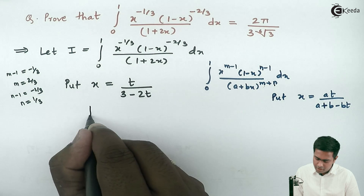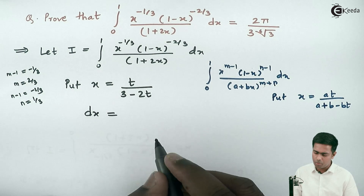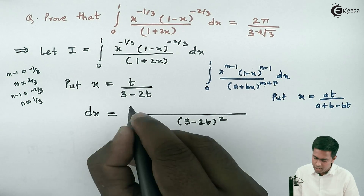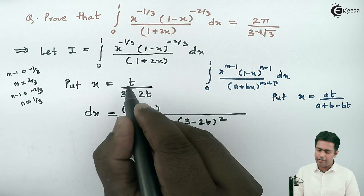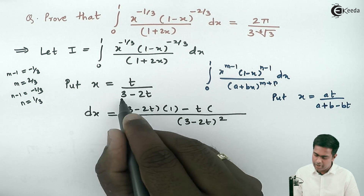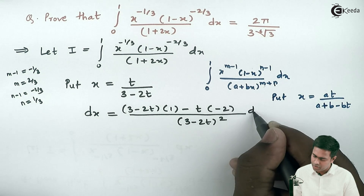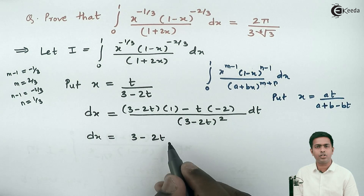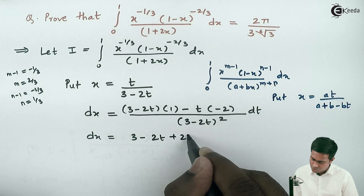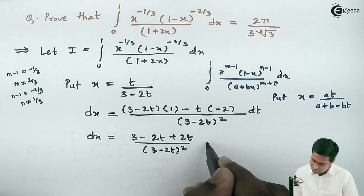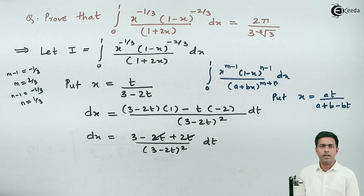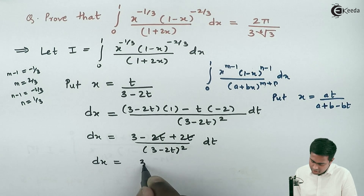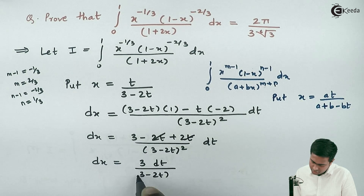Finding the derivative using the quotient rule, dx equals: numerator is (3 minus 2t) times 1 minus t times (minus 2), over (3 minus 2t) squared, times dt. This simplifies to (3 minus 2t plus 2t) upon (3 minus 2t) squared dt. So dx equals 3 dt upon (3 minus 2t) squared.